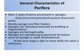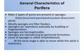Sponges can reproduce asexually by budding and fragmentation. Sponges are mostly hermaphrodite — hermaphrodite means one individual has both sexes present. Sponges also use gemmule formation for reproduction. The larva of sponges is known as amphiblastula. At the larval stage they are able to move, but at the adult stage they become stationary and sessile.